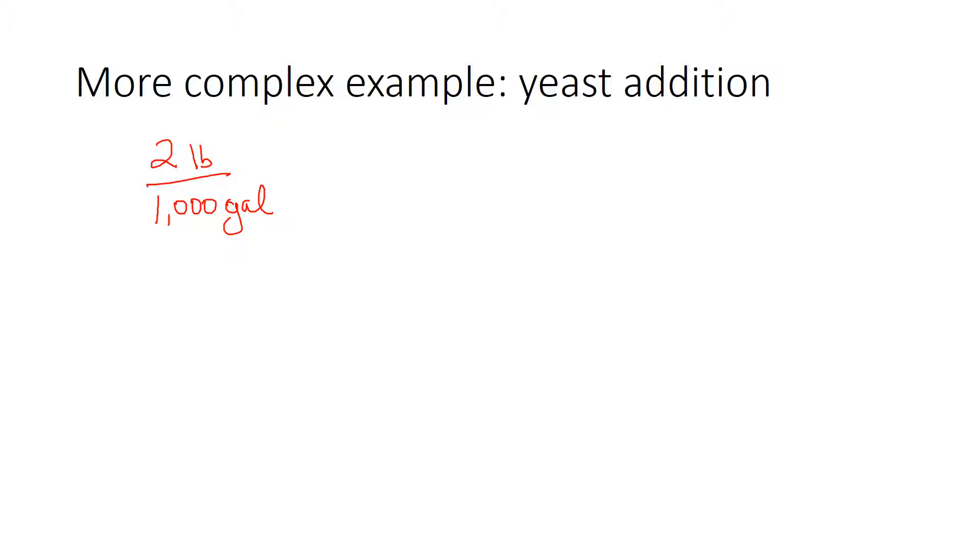Now, oftentimes in wine, we deal in liters, we deal in the metric system. And so based on my little formula there, the first thing you want to do is figure out how much do you add per liter. And usually the addition is in grams per liter. So we have a problem here.